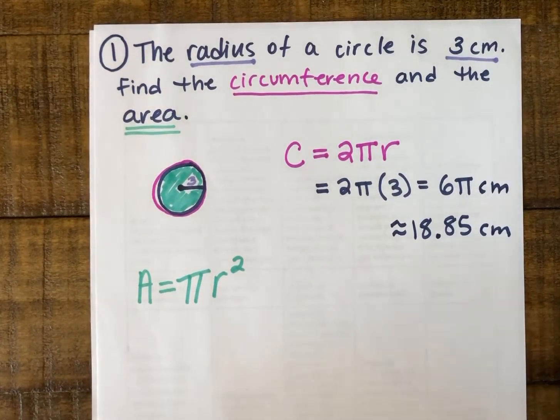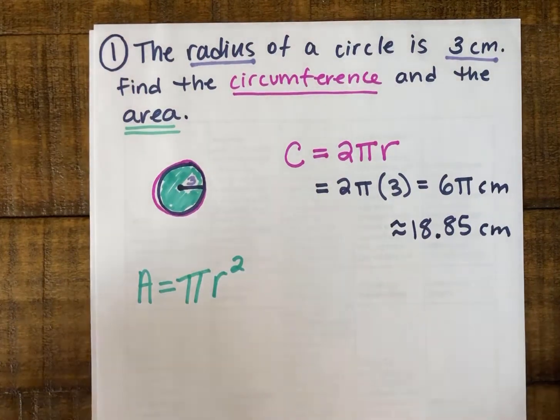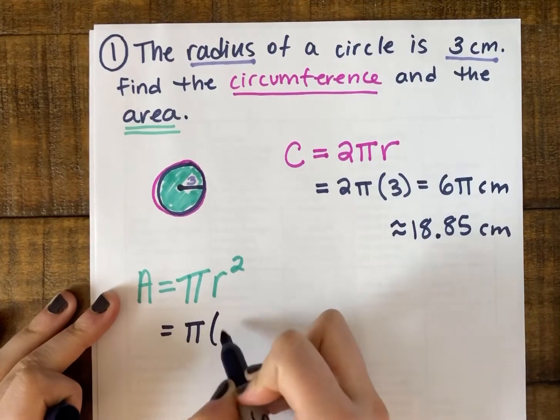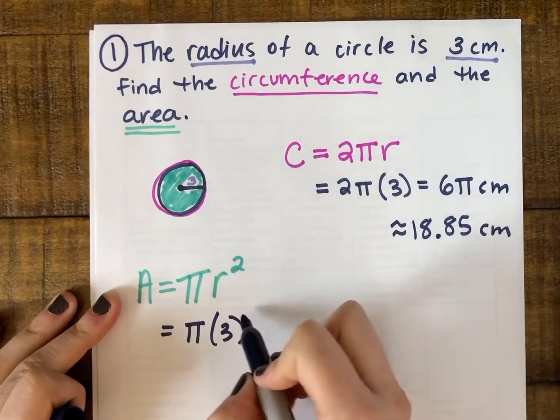Again, I would fill in the parts that I know. So my area is going to be equal to π times my radius 3 squared, which is π(3)².